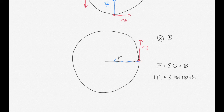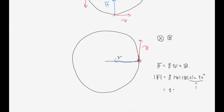The angle between the velocity and the magnetic field is ninety degrees, so sine of ninety degrees equals one. Therefore the magnitude of the Lorentz force simplifies to Q times V times B.